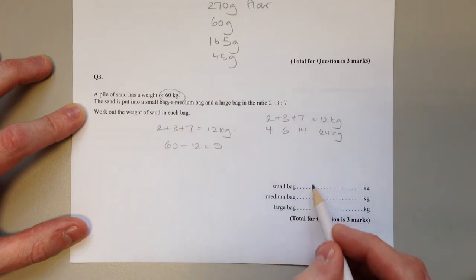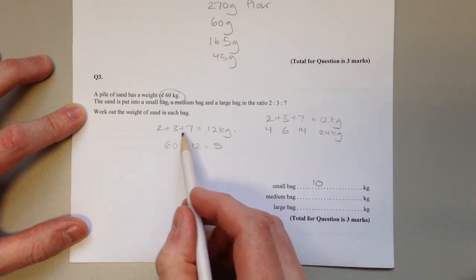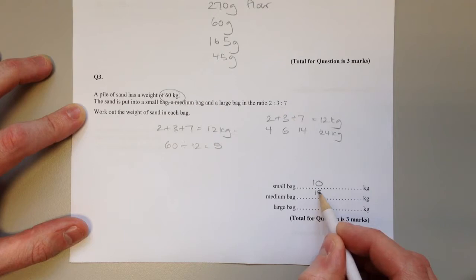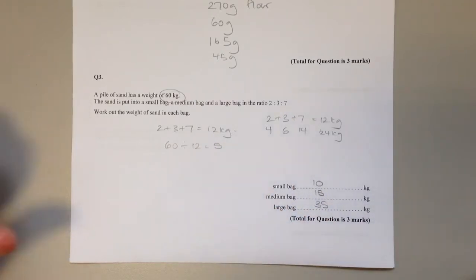So we'll have 5 lots of 2, which is 10; 5 lots of 3, which is 15; and 5 lots of 7, which is 35.